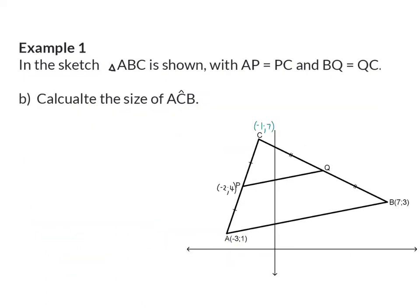Question B: calculate the size of angle ACB. Angle ACB is not an inclination angle because it's not measured from the horizontal line. So our first step is to add a horizontal line at C in our sketch. Because an inclination angle is measured from the horizontal anticlockwise, it also helps to lengthen the two sides of the triangle that meet at C. We can then calculate the angle of inclination of the positive gradient line, calling that theta, and the angle of inclination of the negative line, calling that beta, and make a plan to determine angle ACB from this information.